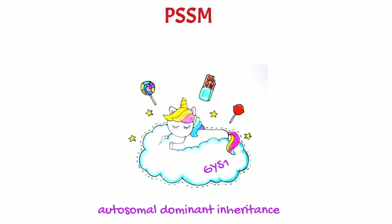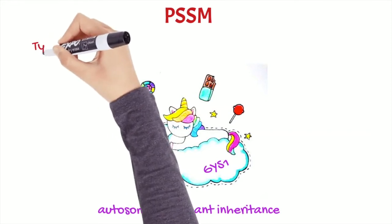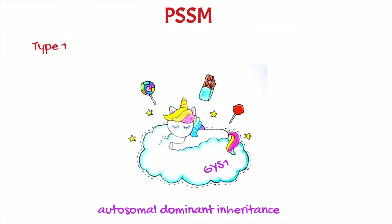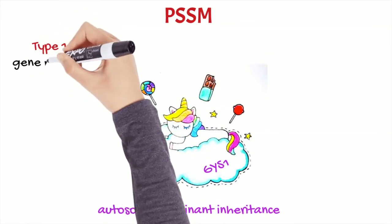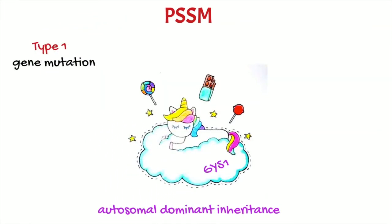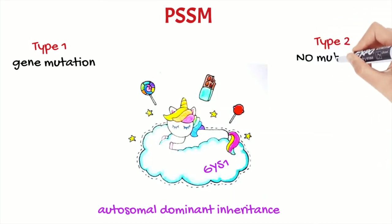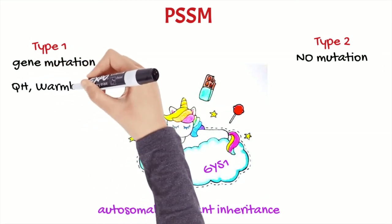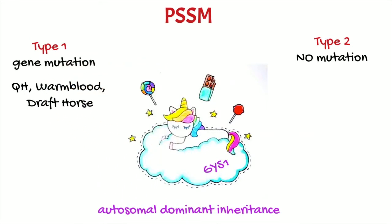Not all cases with excess of glycogen in muscle fibers present this mutation, so the disease has been divided into two types. Type 1 is when the mutation is present, while type 2 is when there are polysaccharides in the fibers but there is no mutation. The genetic mutation has been found in particular in quarter horse, warmblood, and draft horses.